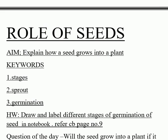The aim of today's class is to explain how a seed grows into a plant. We are learning stage by stage how a seed grows into a plant. By the end of this lesson, you will be able to explain how a seed grows into a plant stage by stage.